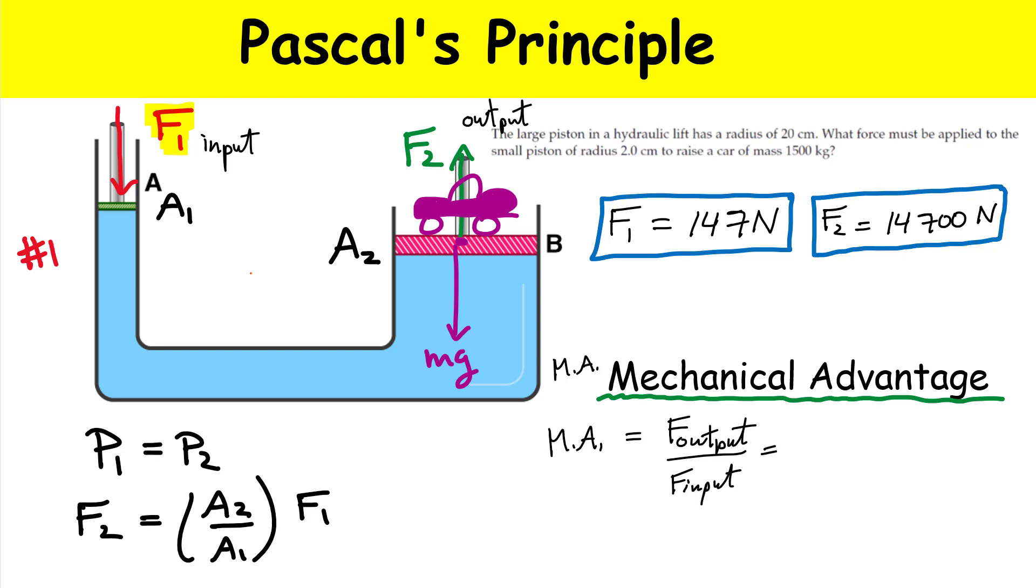Oftentimes when we're dealing with systems like this, where you have an input on one side and we have an output on the other side, a definition comes up in terms of what is called the mechanical advantage. The mechanical advantage for any system is equal to our output force over our input force. For this system, our output force is the force F2 and our input was the force F1. If you actually do this, you're going to get a factor of 100. So the mechanical advantage for this hydraulic system is 100.